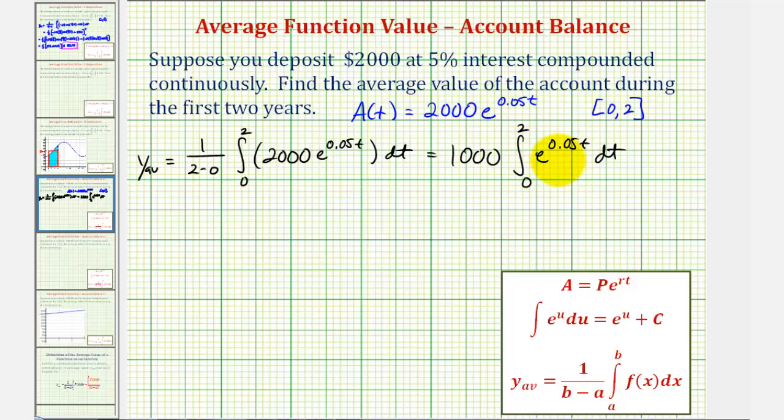Now to find the anti-derivative here, we'll have to perform a u substitution, where u would be equal to 0.05t, so du would be equal to 0.05 dt. So notice if we solve this for dt, we'd have du divided by 0.05 equals dt. Which means when we integrate this, we'll have to divide by 0.05.